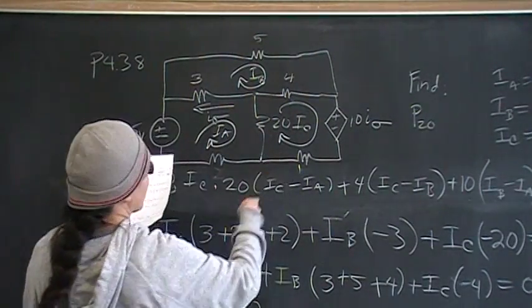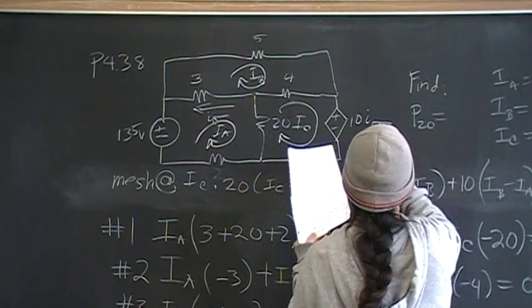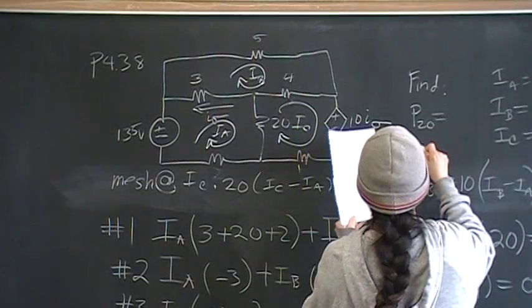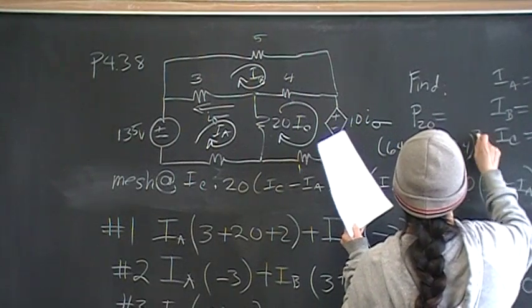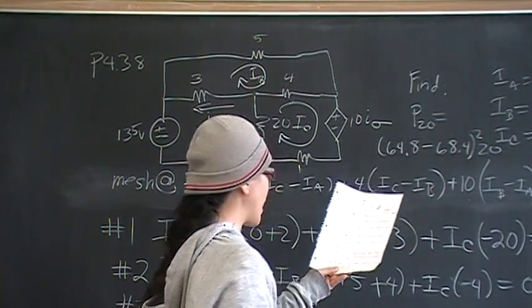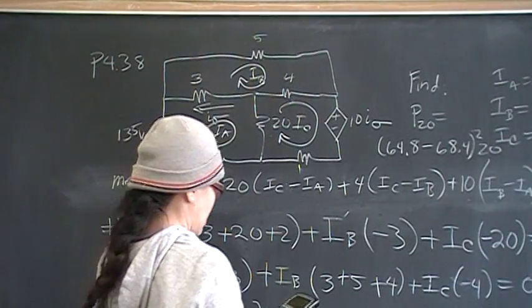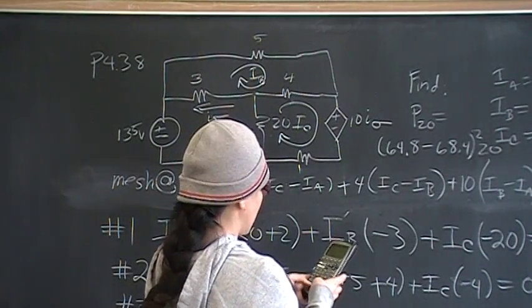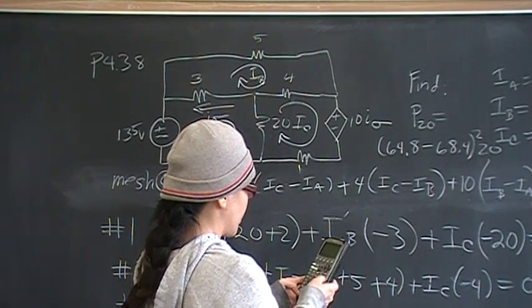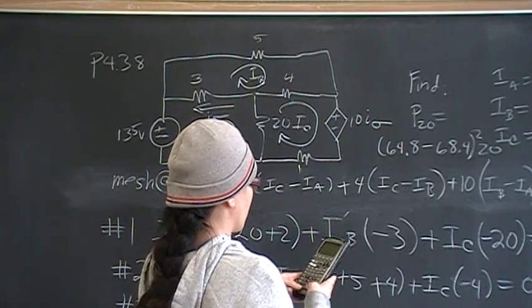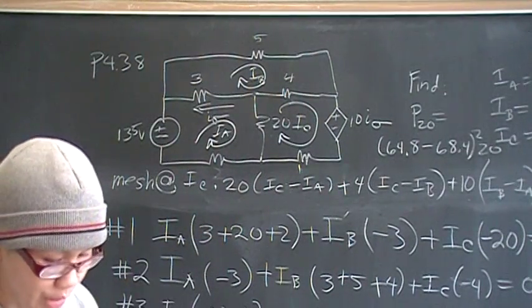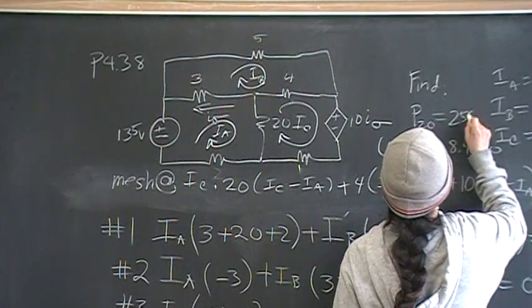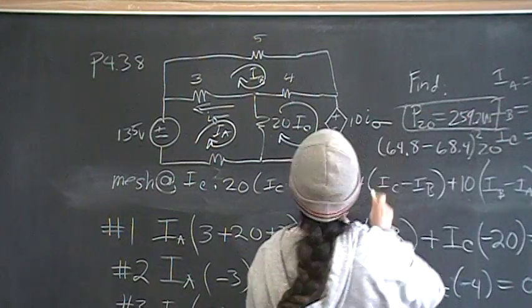So then this current is going to be IA minus IC. So then P20 is going to be I squared R. So that's going to be 64.8 amps minus 68.4 amps, quantity squared, times 20. Let me make sure that that's correct. So I'm going to go 64.8 minus 68.4, square that, times 20. And you should get 259.2 watts. So that's 259.2 watts, and that's the answer to problem number 38.